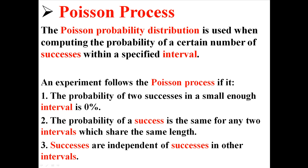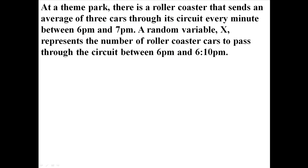Let me try to give you an example of something that might follow the Poisson process. At a theme park, there is a roller coaster that sends an average of three cars through its circuit every minute between 6 p.m.